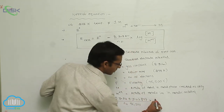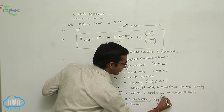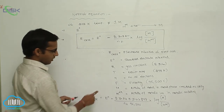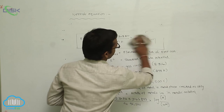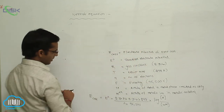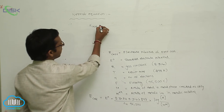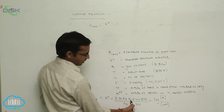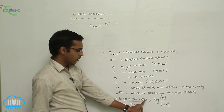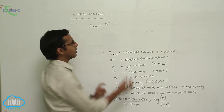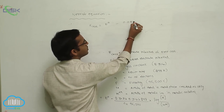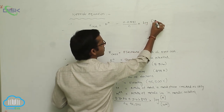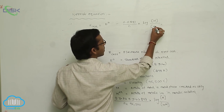By multiplication and calculation of 2.303 × 8.314 × 298 / 96500, we get 0.0591. So the simplified Nernst equation becomes: E cell equals E naught minus (0.0591 / N) into log [M] / [M⁺ᴺ]. This is the final simplified form of the Nernst equation.